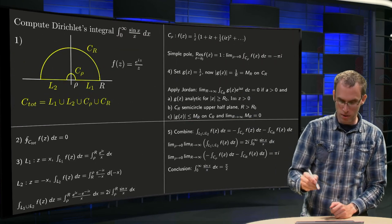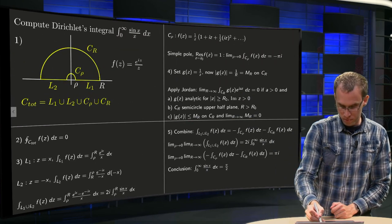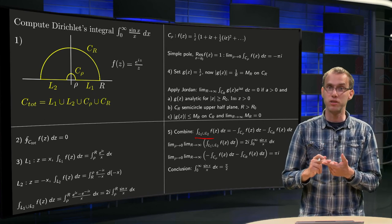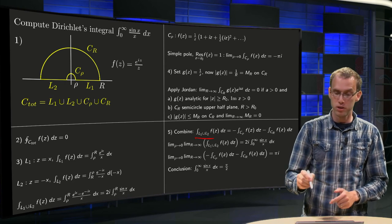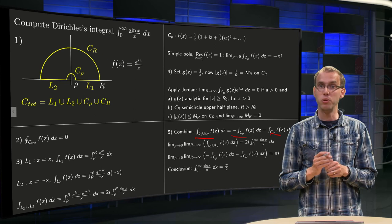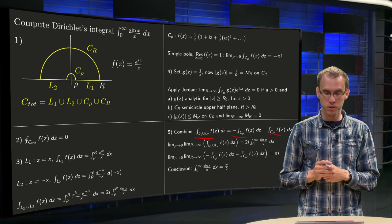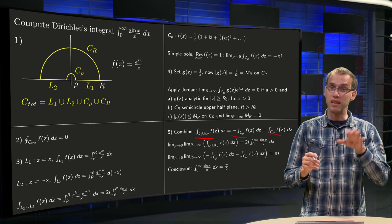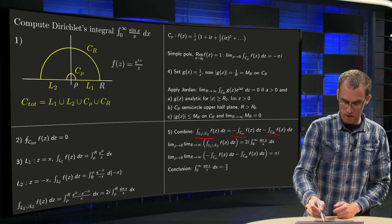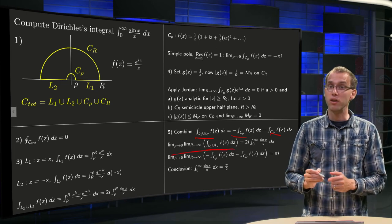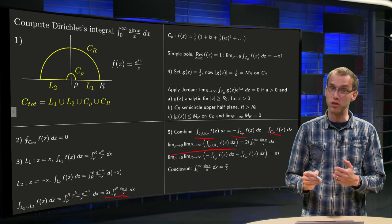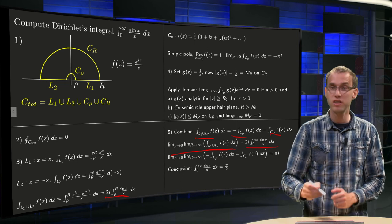Now we have all contributions: L1, L2, c_rho, and CR, so we can wrap everything up in the final step. We combine: integral L1 joint L2 plus integral along c_rho plus integral along CR equals 0, so we can take those to the other side. Integral L1 joint L2 equals minus those two integrals. Then we take limits rho to 0 and R to infinity of the left hand side.